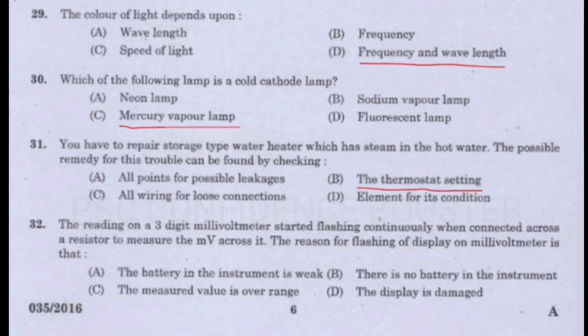Question number 32. If the reading on a three-digit millivolt meter started flashing continuously when connected across a resistor to measure the millivolt across it, the reason for flashing of display on millivolt meter is that: Option A - The battery in the instrument is weak. Option B - There is no battery in the instrument. Option C - The measured value is over range. Option D - The display is damaged. Answer is Option C: The measured value is over range.